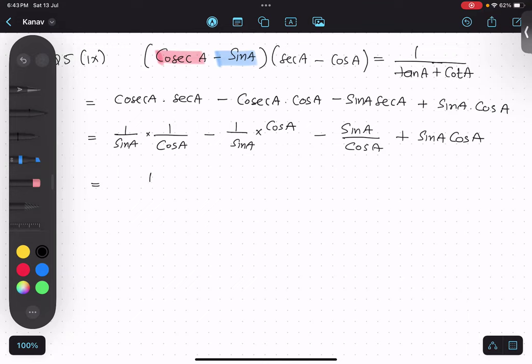Okay, this will become sin A cos A minus, this will become cos upon sin, cos A by sin, cot.